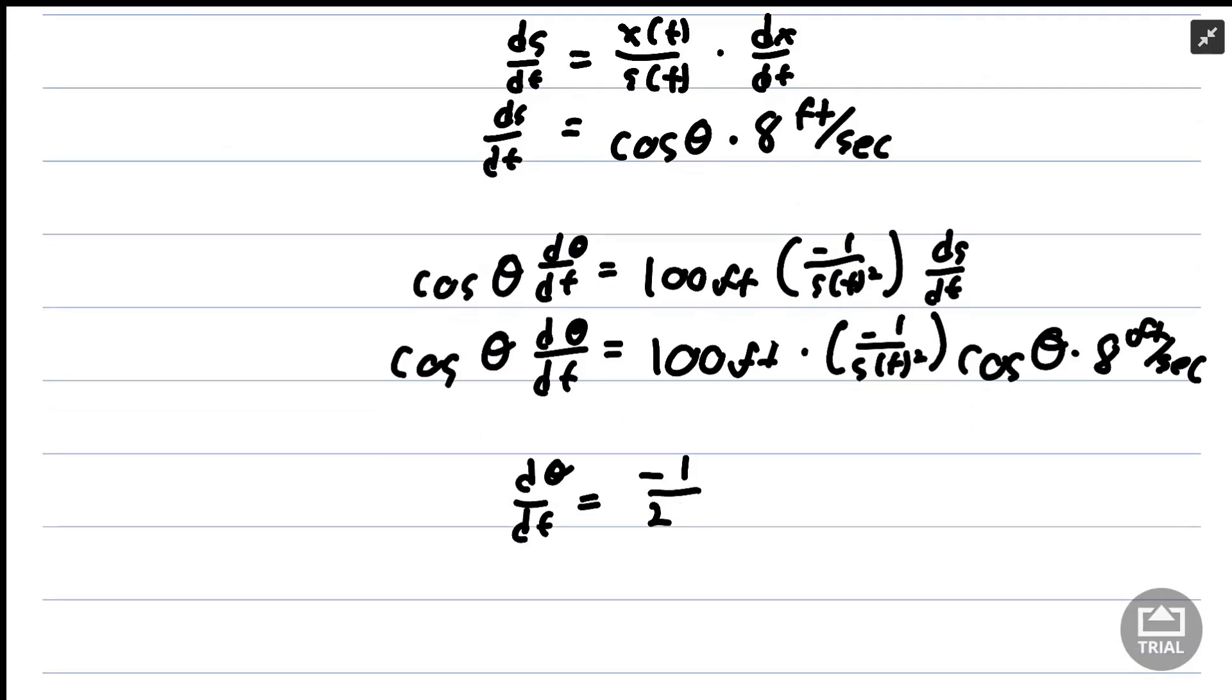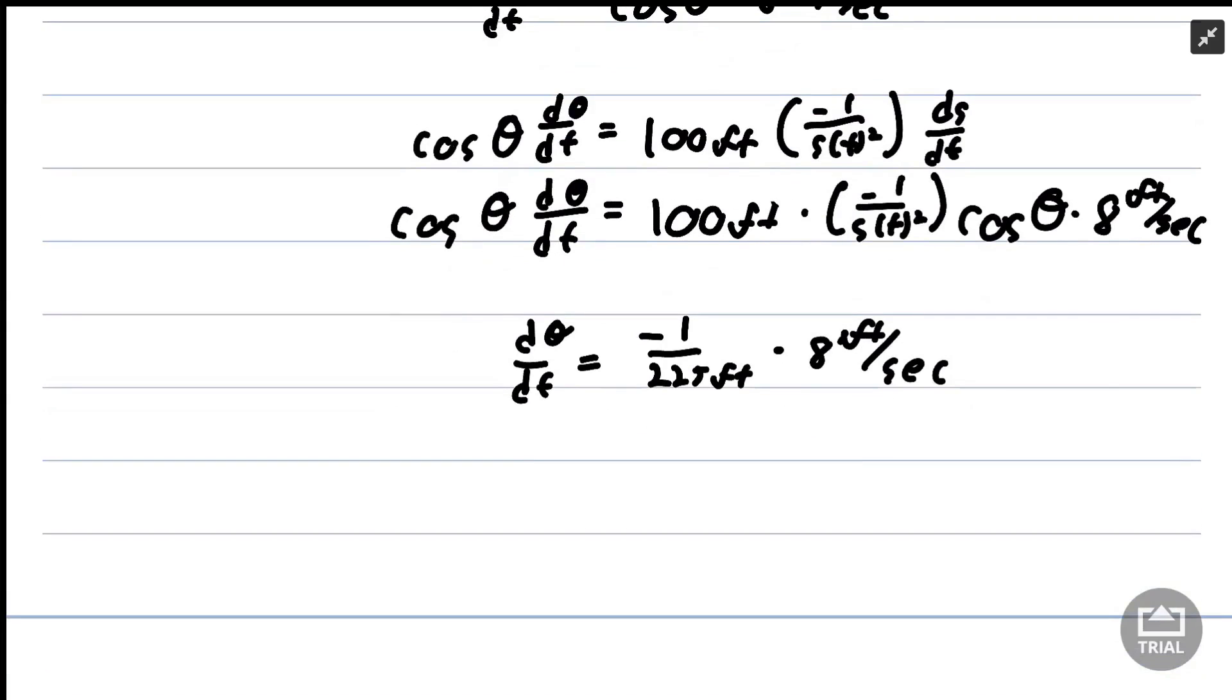Times 8 feet per second. So our final expression for dθ/dt is a relatively nice-looking negative 8 over 225 radians per second.